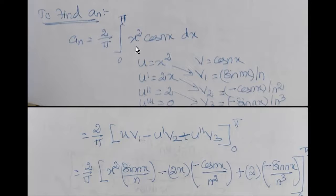So an equal to 2 by pi integral 0 to pi x squared cos nx dx. x squared is the first function, cos nx is the lower function. So u equals x squared, one time differentiate 2x, second time differentiate 2, third time differentiate 0.